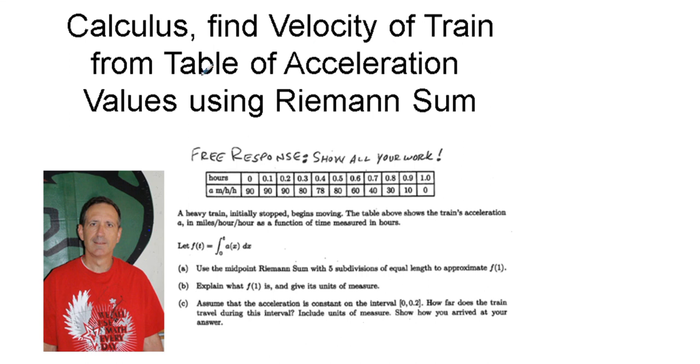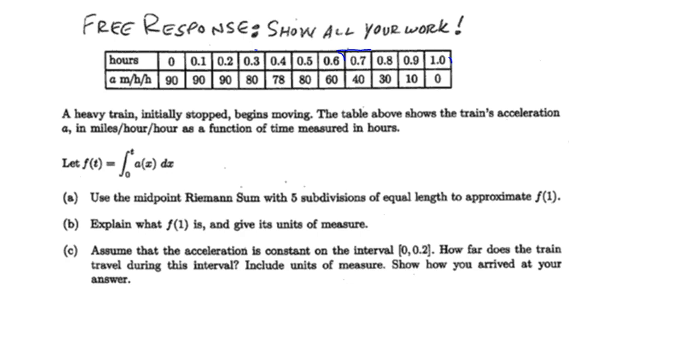Calculus: find velocity of train from table of acceleration values using Riemann's sum. This is a problem from a recent test and students overall did pretty well on this, but there are some things that we need to review to always do better.